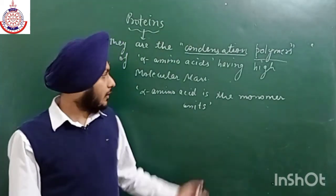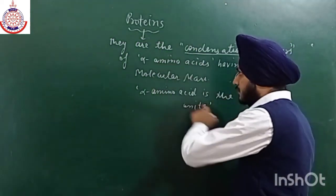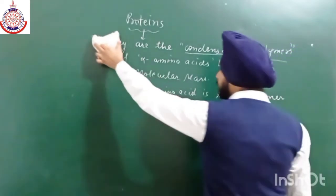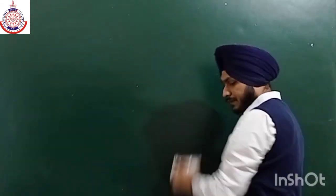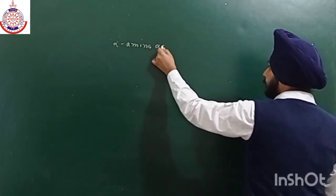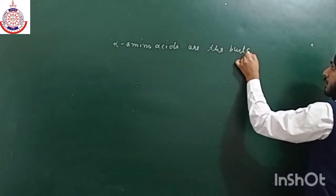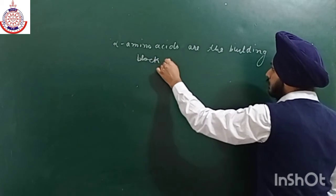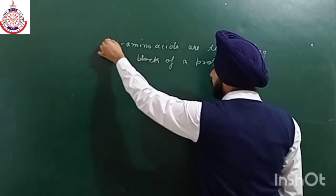Before we move on to proteins, we must know about its monomer, that is alpha amino acid. We have to discuss why it is called alpha and not beta, gamma, or delta. Alpha amino acids are the building block of a protein.